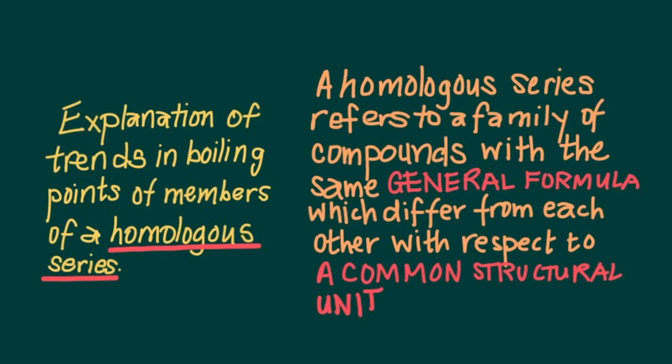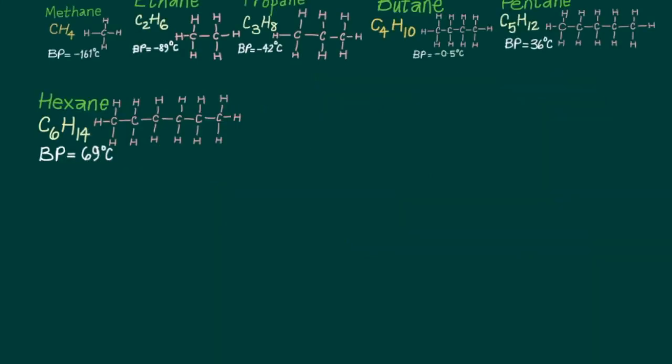Looking specifically at explaining the trends in boiling points of members of a homologous series. What is a homologous series? It refers to a family of compounds that obey the same general formula, and each member of that family differs from the other by a common structural unit.